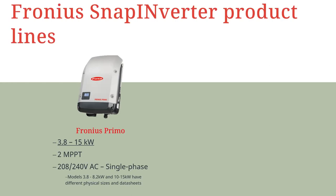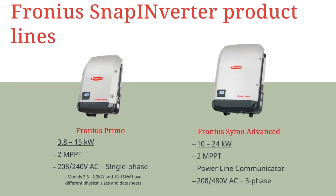Our flagship commercial inverter is the Fronius Symo Advanced. The Symo Advanced is our three-phase inverter line ranging from 10 kW to 24 kW. It also features two MPP trackers and the power line communicator for SunSpec rapid shutdown solutions. Each inverter model can be purchased with a data manager card included in our web server versions, or without a data manager card in our light versions.